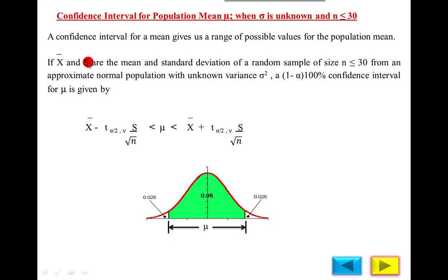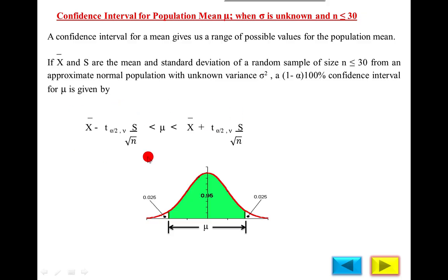If x-bar and s are the mean and standard deviation of a random sample of size n less than or equal to 30 from an approximate normal population with unknown variance — this is the important condition — then a (1 − α)×100% confidence interval for μ is given by the formula used for testing of hypothesis for population mean μ. The condition is: σ is unknown and sample size is small, less than or equal to 30.